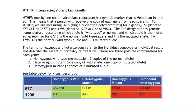The greater-than designation is genetic nomenclature describing which allele is wild type or normal and which allele is mutated. For 677, C is the normal or wild type allele and T is the mutated allele. For 1298, A is the normal or wild type allele and C is the mutated allele.